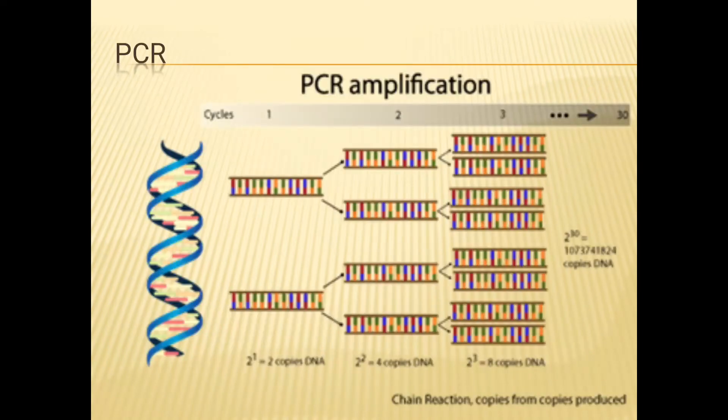Let's first understand what PCR is. PCR amplifies a segment of DNA into 2 copies, then 2 into 4, 4 into 8 copies, and so on, and identifies the amplified product which is usually tagged with a fluorescent dye.